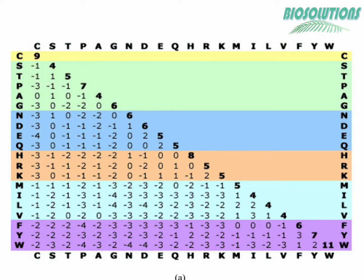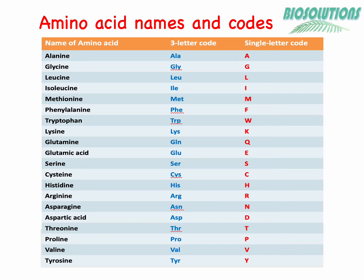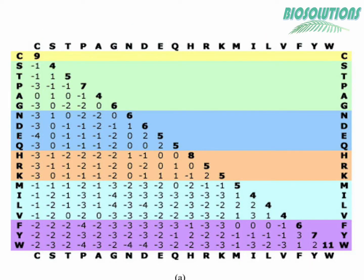Now let us have a look at the BLOSUM62 matrix. Here we can see a rectangular table of 20 by 20 with single-letter amino acid codes written in all four directions. If you don't understand the single-letter code for amino acids, there is a table showing the names of 20 amino acids and their three-letter and single-letter codes. We can read scores going bottom to up or left to right very conveniently in this matrix — in fact, you can read these codes from any direction.